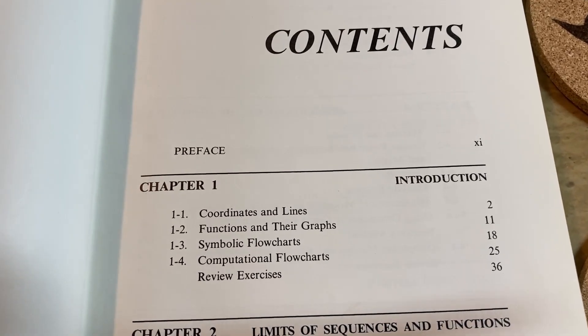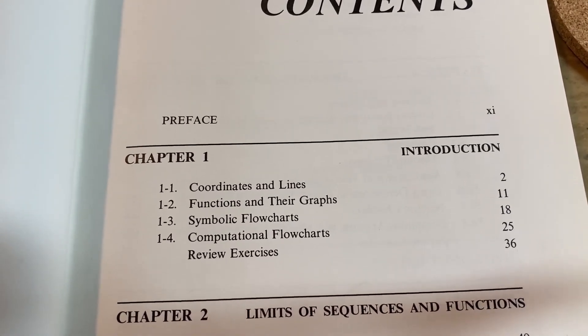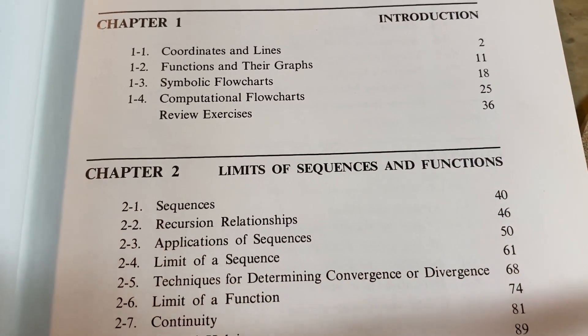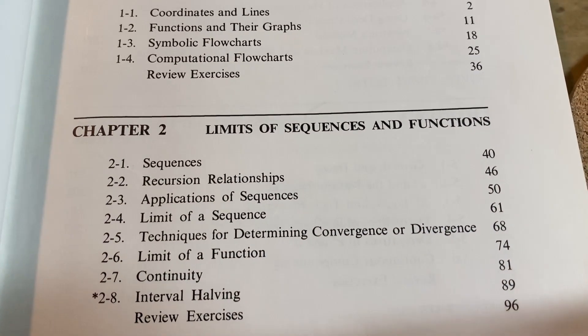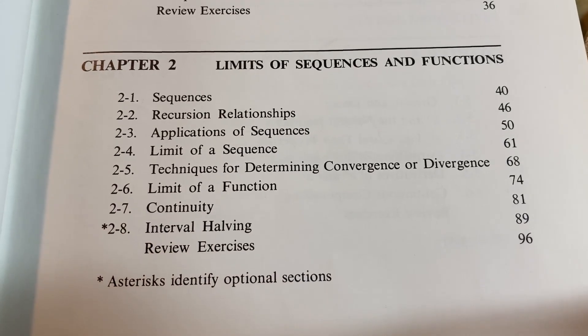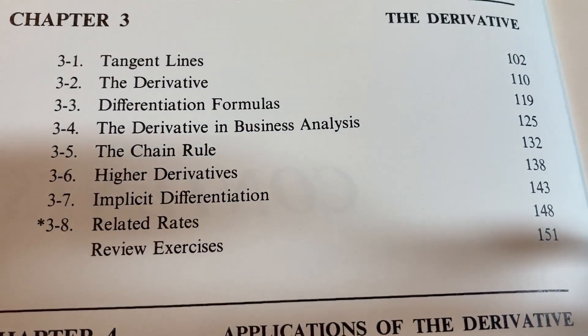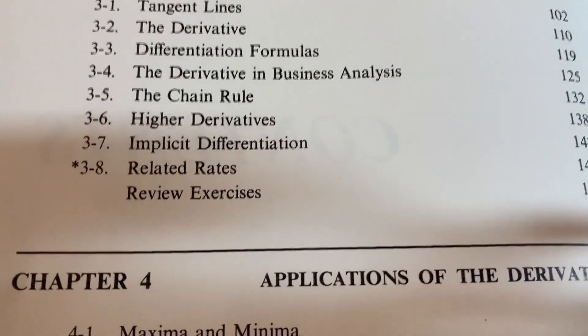Let's take a look at the contents of this book. Chapter one is an introduction so you can see some of the topics there. Chapter two is on limits of sequences and functions. The asterisk means that it's an optional section. Chapter three is on the derivative so those are common topics that you would see in a calc one course.